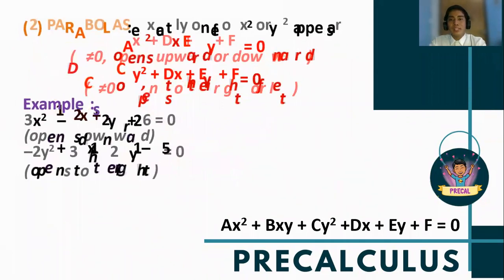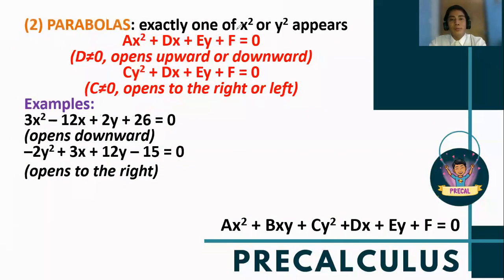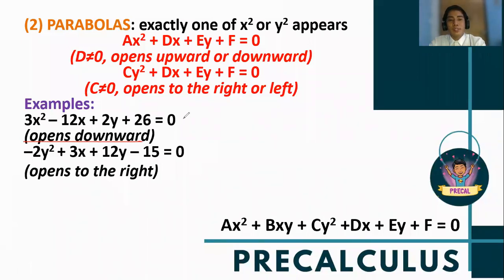For the equation of parabolas, exactly one of x squared or y squared appears. An example of a parabola which opens upward is 3x squared minus 12x plus 2y plus 26 equals 0 — notice that only x squared appears. In the same way, if only y squared appears in the formula, it is still an equation of a parabola, which opens to the right.